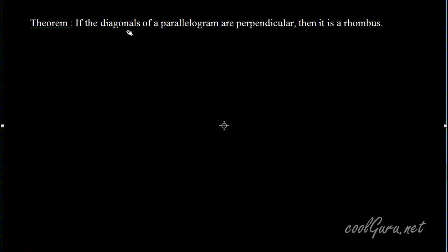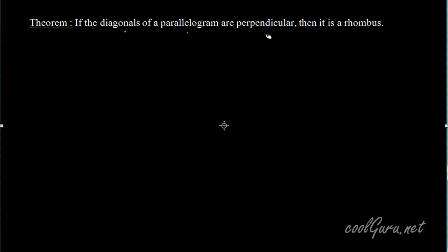We will prove that if diagonals of a parallelogram are perpendicular, then that parallelogram is a rhombus. So given that ABCD is a parallelogram, and AC and BD are its diagonals perpendicular to each other, we have to prove that ABCD is a rhombus.